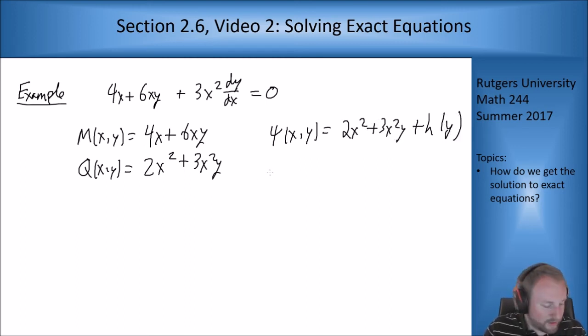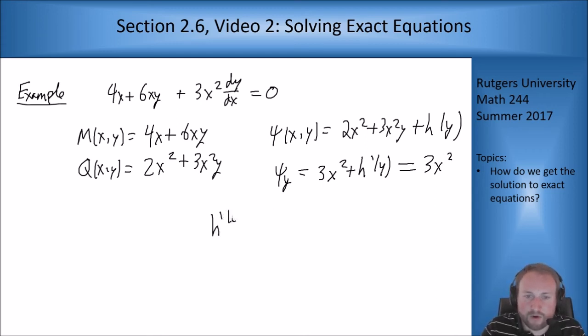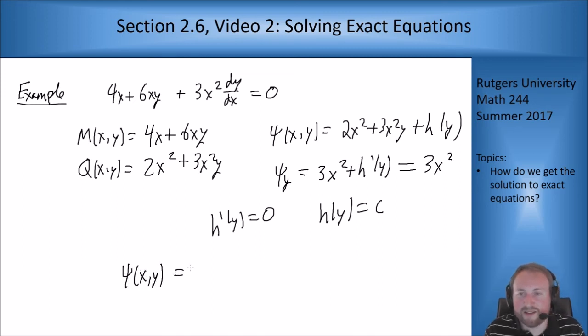And so then ψ_y is going to be just 3x² + h'(y). And I want this to equal 3x² because that's what N is up above. So this tells me h'(y) = 0. h(y) is a constant.